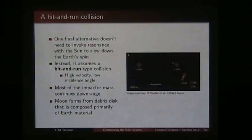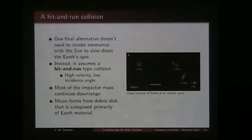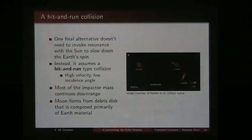The third alternative is what we call a hit-and-run collision. The idea is that the impact is at such a low angle — a glancing impact — that the impactor actually flies off downrange and keeps going so fast that it doesn't get captured by Earth's gravity. But as it hits the Earth, it throws a lot of material into a disk around the Earth that then goes on to form the moon. The material thrown into the disk by the impact would have a composition similar or identical to the Earth, naturally explaining the isotopic similarities. This involves a high-velocity, low-angle, relatively small impactor.